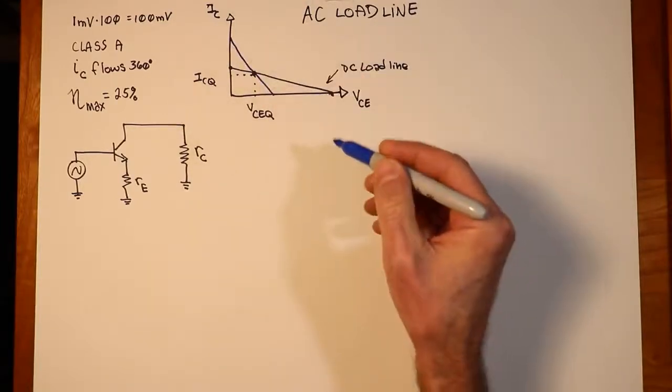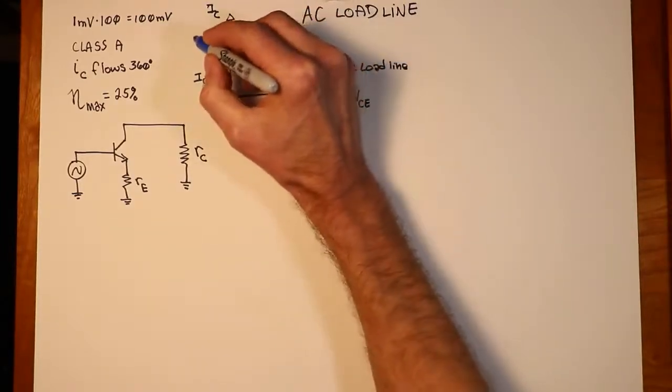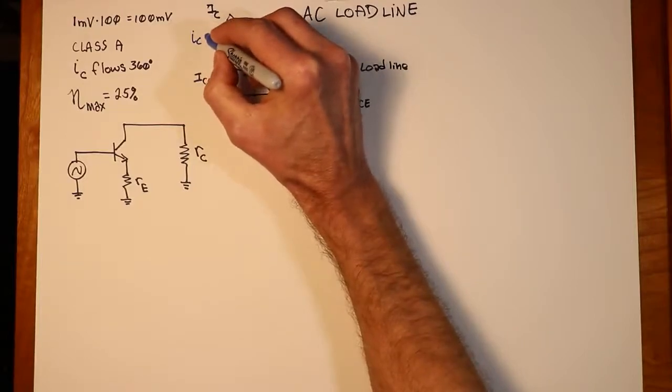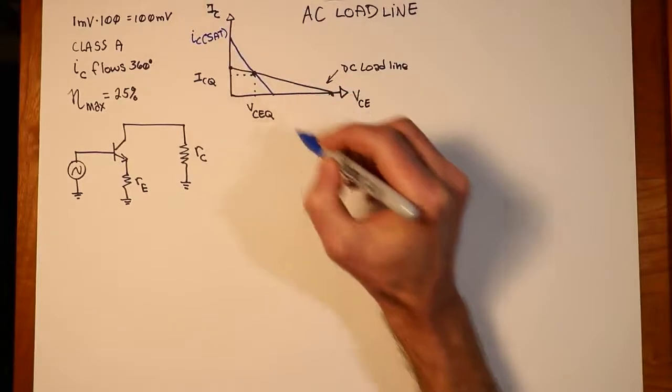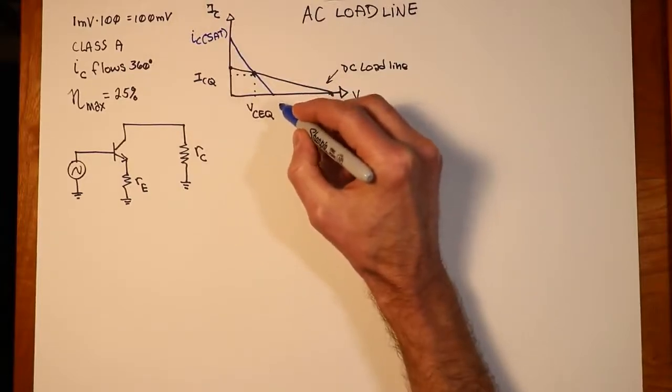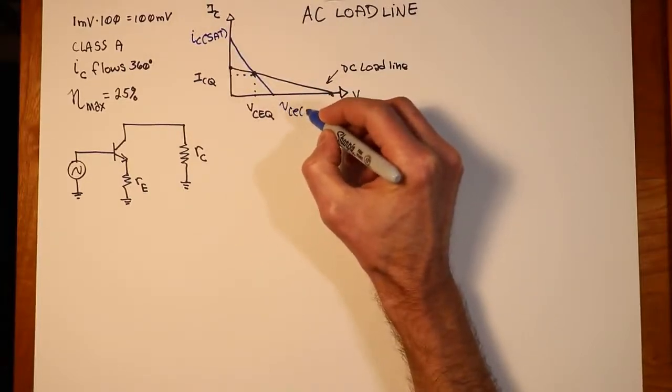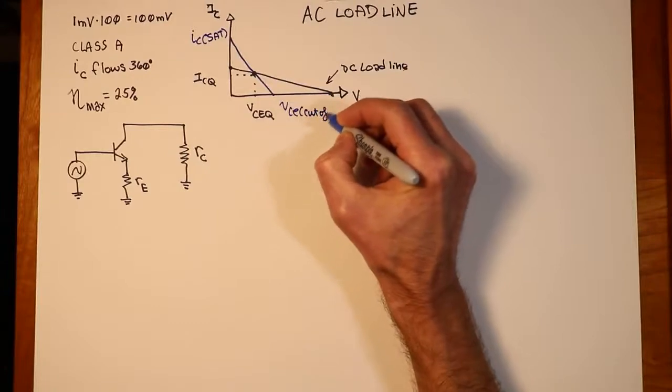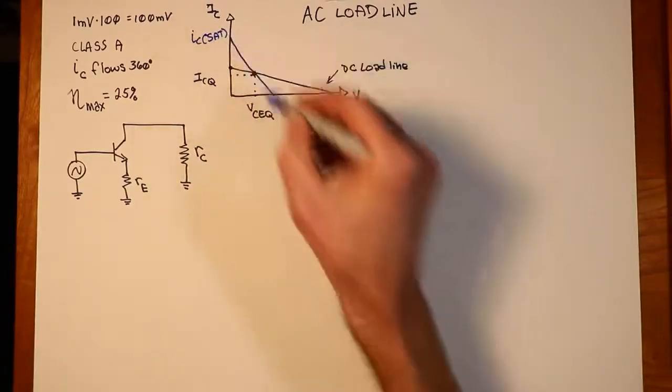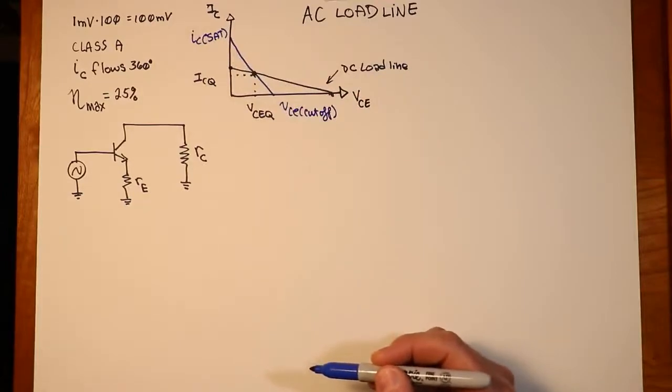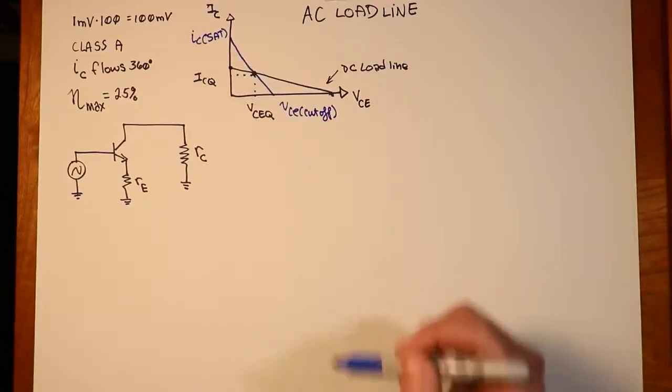Now there would still be endpoints on here. We would still have, right over here, an IC sat like we used to have for the DC, and there would, of course, be a cutoff voltage, a VCE cutoff, at this endpoint. Well, our goal is going to be to find out what those particular values happen to be. Because here's what's going to happen.